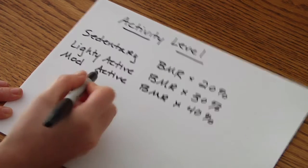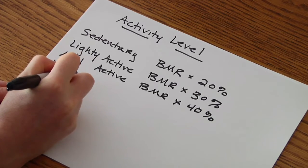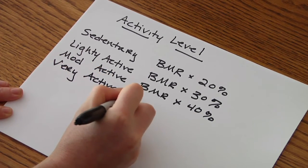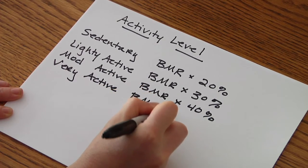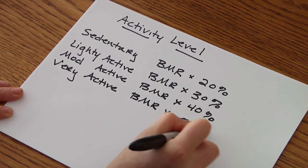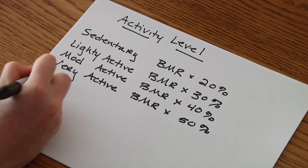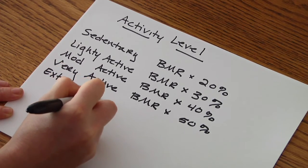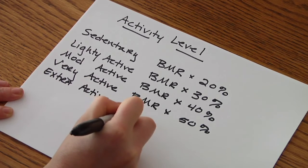Very active would be exercising intensely on a daily basis for prolonged periods of time, so you take your BMR times 50%. And then if you're extra active like if you're training for a marathon or you're in hard labor, then you take your BMR and multiply that by 60%.